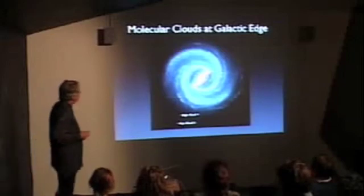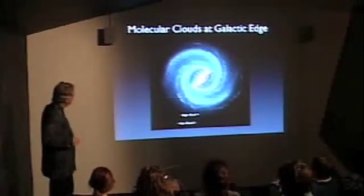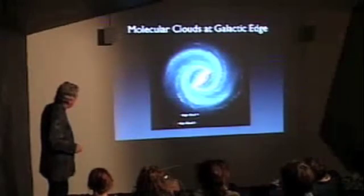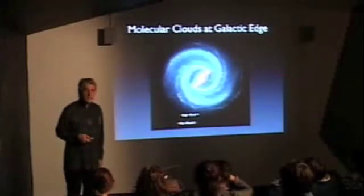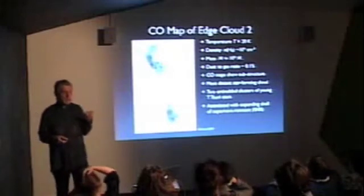Molecular clouds is the subject of some of my own research. Here's a diagram of our galaxy again. There are a couple of molecular clouds right out on the edge of the galaxy — we called them Edge Cloud 1 and Edge Cloud 2. Over the last few years I've been looking at Edge Cloud 2, which is about 50,000 light-years from our solar system. We go to the James Clark Maxwell Telescope in Hawaii, on top of Mauna Kea — a very high ancient volcano where the air is very dry and the weather is very good, so you're looking through less atmosphere.